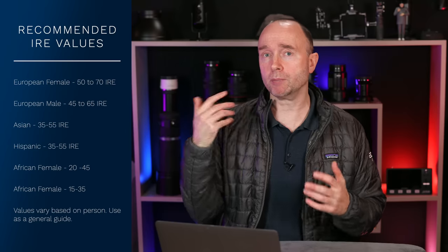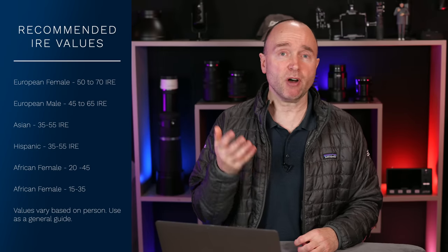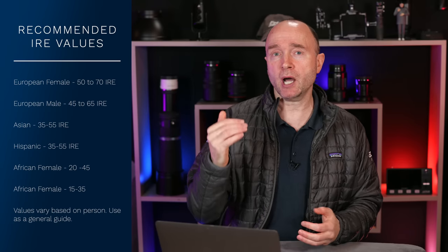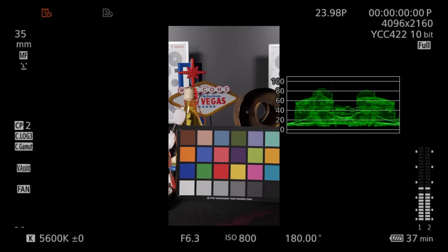With waveforms, you can determine the exact IRE of your talent so they're perfectly exposed every time. I shoot with a Ninja 5, which has waveforms, but it's monochromatic. The R5C gives a color waveform — I can wiggle slightly and see where I am represented. I'm relatively pale, European, so my IRE is around 65 to 70; my wife is Asian, so I bring it down to about 55. The Canon R5 cannot do that without an external monitor — the histogram only shows brightness from 0 to 255, and it disappears when you press record.